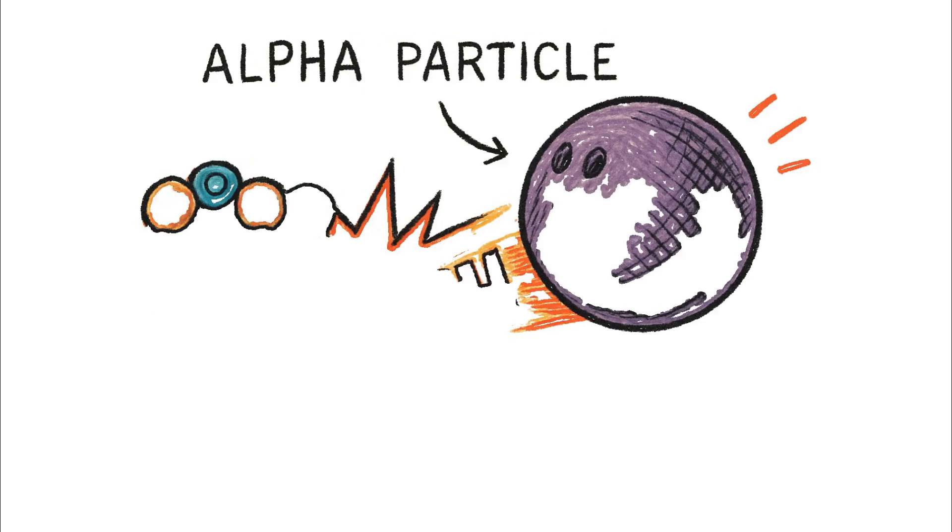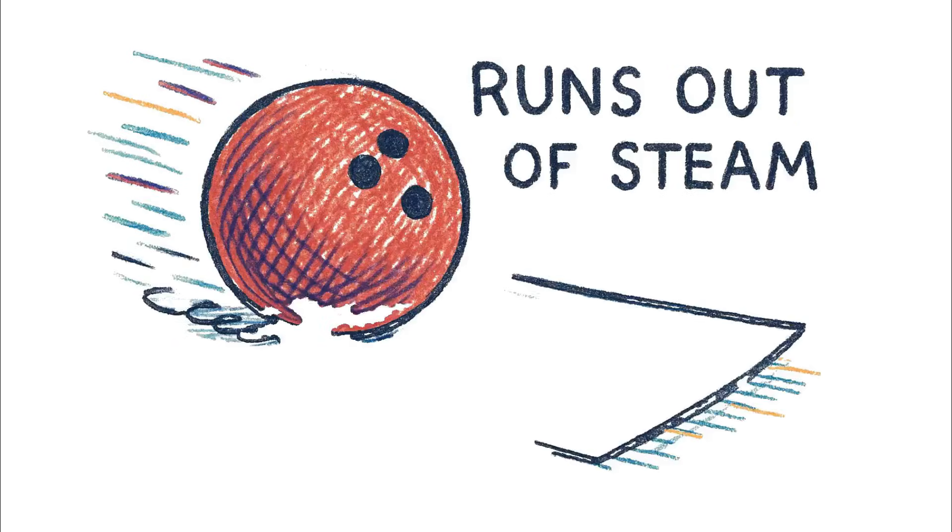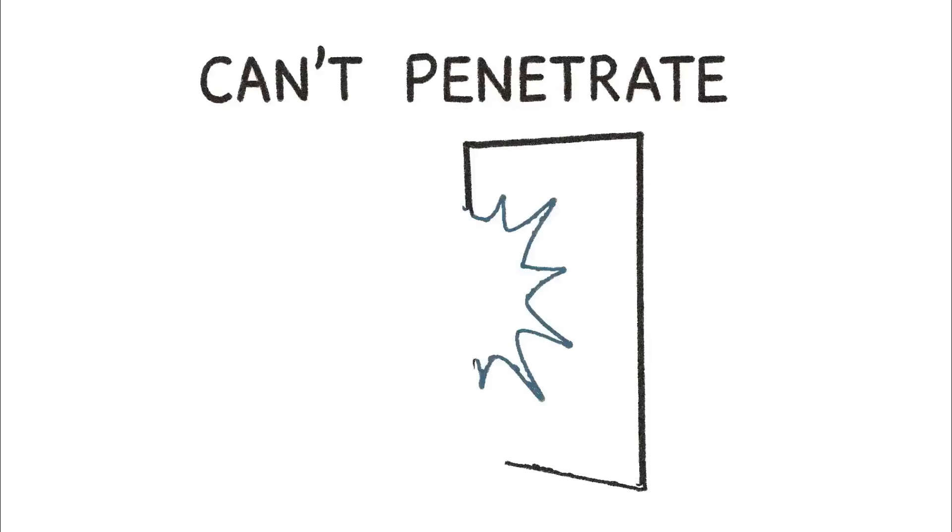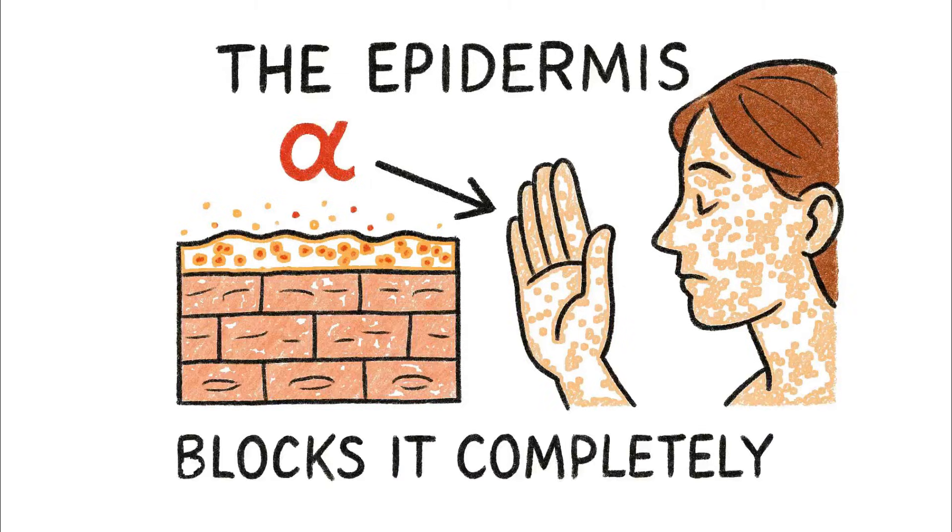When it's fired out from a decaying atom, it smashes into whatever it hits with tremendous force. But like a bowling ball, it runs out of steam very quickly. It can't penetrate. A single sheet of paper will stop it cold. The outer layer of your skin, the epidermis, is more than enough to block it completely.